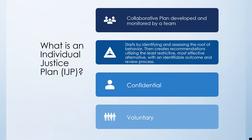It's important to understand what an IJP is and who it can be used for. An IJP is a collaborative plan developed and monitored by a team of individuals. The client with the disability is at the center of the team, which can also include professionals and other important people in the person's life. The IJP process is started by identifying and assessing the root of the behavior that either caused or may cause involvement in the criminal or juvenile justice system. The team then creates recommendations that are least restrictive and most effective, and will identify outcomes and a review process. The IJP document is confidential and the process is voluntary, meaning the individual with a disability and/or their legal decision-maker must consent to all components.